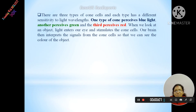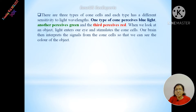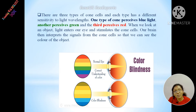We all have three types of cone cells. One cone cell perceives blue light, another perceives green light, and the third perceives red light. When we look at an object, light enters our eye and stimulates the cone cells. Our brain then interprets the signals from the cone cells so that we can see the color of the object.